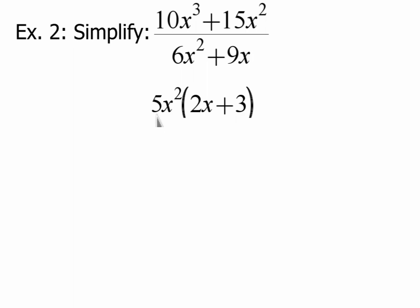10x cubed divided by 5x squared is 2x. 15x squared divided by 5x squared is just 3. So that's the fully factored version of the numerator.